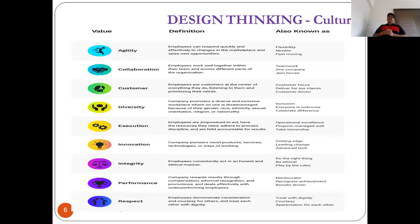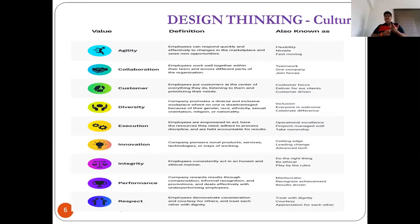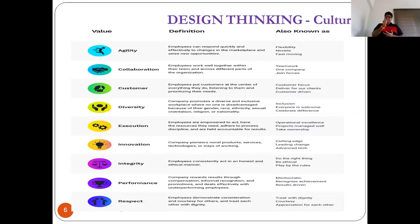You could see here the culture. MIT Sloan University did a good study on how to rate companies, products, or brands based on their culture. They identified nine values: agility, collaboration, customer, diversity, execution, innovation, integrity, performance, and respect. These nine parameters were measured across every organization to find out where they stand in improving these values.